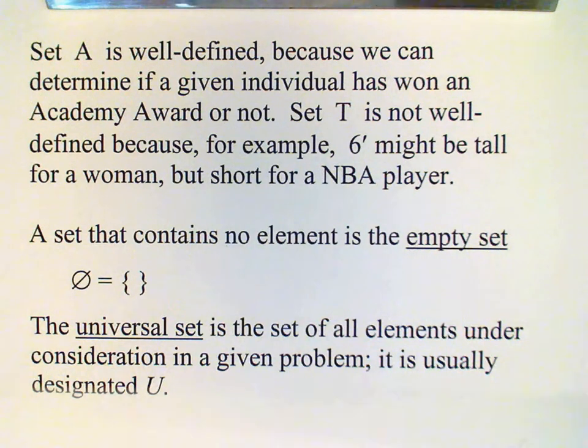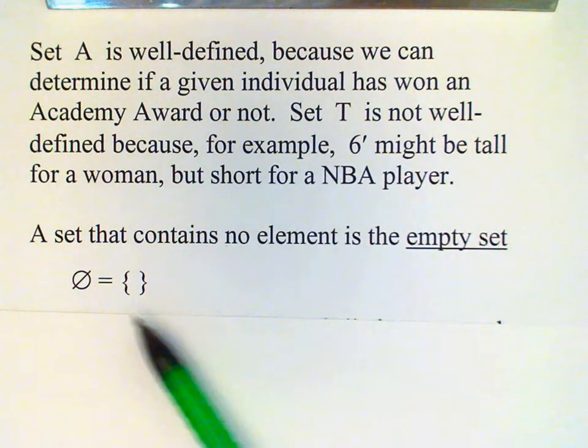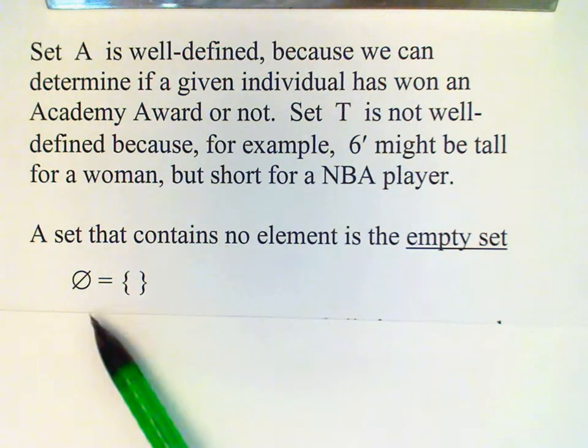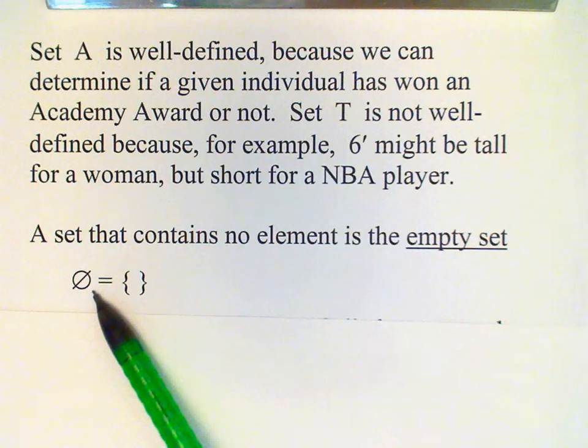Now there are a couple of special sets that will have special designations. And the first one that we want to think about is a set that contains no element. That's referred to as the empty set. And there are two ways to specify the empty set. One way is simply to draw the curly braces with no element listed inside. Another way is to write the symbol zero with a line through it. That is recognized by mathematicians to designate the empty set.